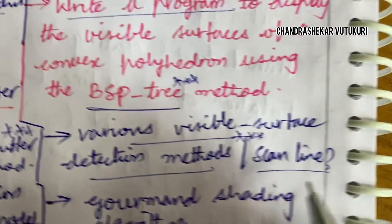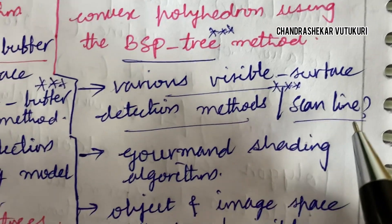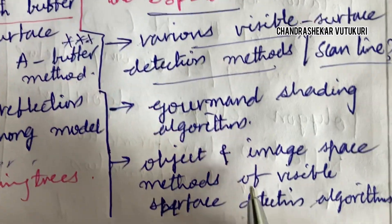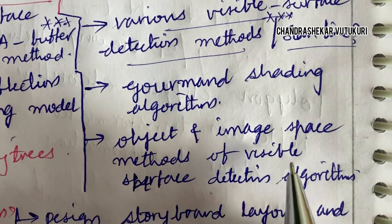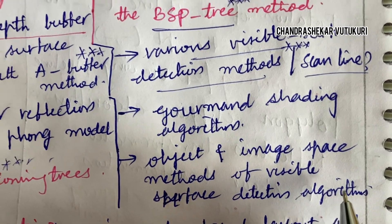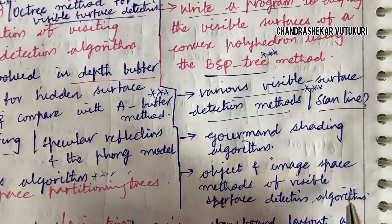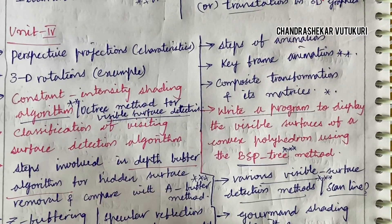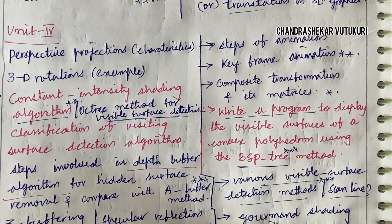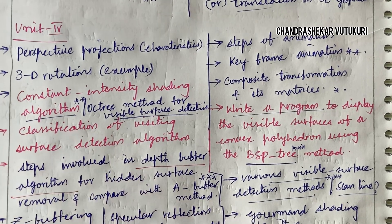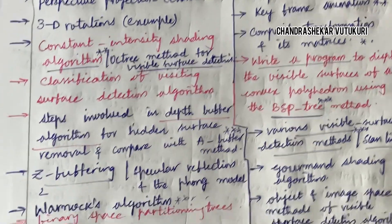Define — what is the scan line? Gouraud shading algorithm, or the object and image space methods of visible surface detection algorithms — you will be getting algorithms as well as certain programs and small definitions in 2 and 3 marks.